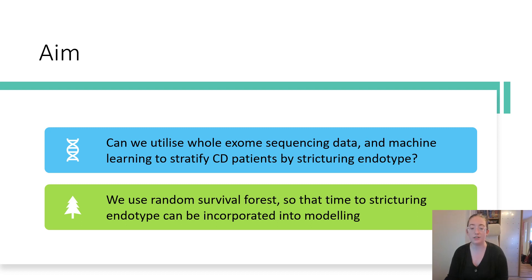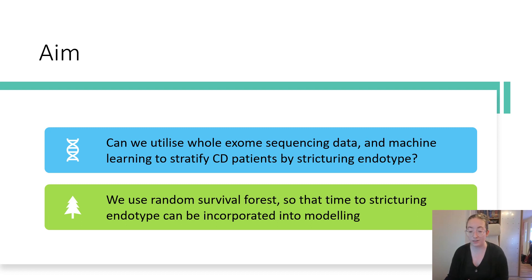What we set out to do was to see if we could stratify patients based on their stricturing endotype using whole exome sequencing data. Because patients can develop this endotype at any point in their disease course, we wanted to incorporate a survival element into our machine learning modelling, and so we used random survival forest, and as such we also used time-to-stricturing endotype data.